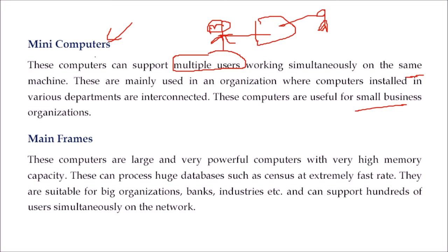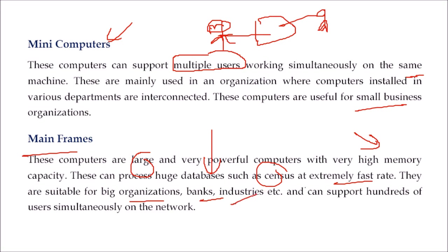Then mainframes. These are very large, powerful computers with very high memory capacity. They can process huge databases at extremely fast rates. If you are talking about big organizations — banks, industries — they support hundreds of users. Organizations like Facebook, Twitter, and Instagram ought to have mainframes.